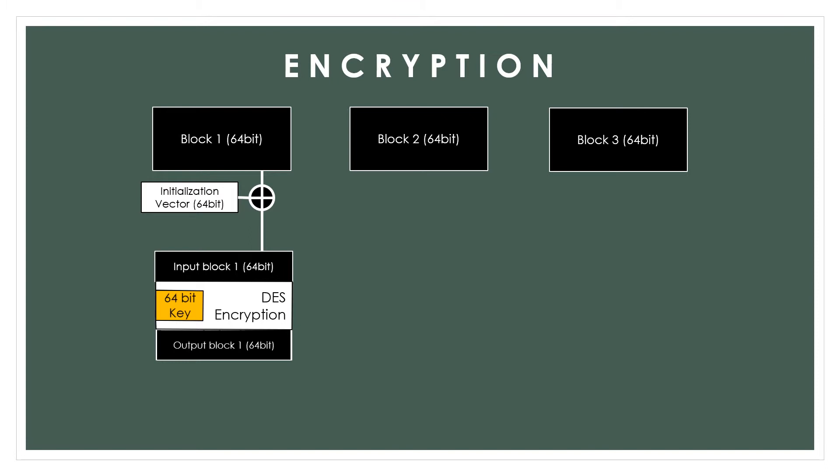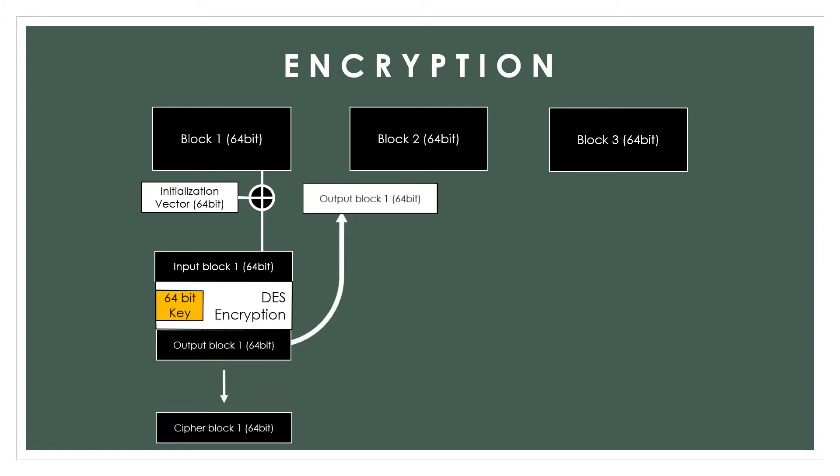After the block is XORed, the block is encrypted with an encryption method of choice. As mentioned, this example is using DES, which requires a key of 64 bits. After the encryption is completed, the output or cipher block is fed back to the next step. It is important to note that the plain text block, IV, input block, and output block are all of the same size — in this case, 64 bits.